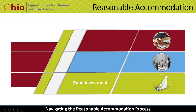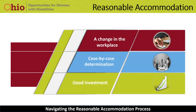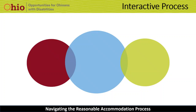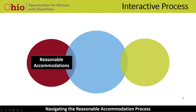There definitely is a business case for both hiring people with disabilities and also providing reasonable accommodations. Let's now turn our focus to the process of providing these accommodations. Is having a process required? The simple answer is no. Title I of the ADA requires covered employers to provide reasonable accommodations to qualified applicants and employees with disabilities unless doing so causes an undue hardship. Title I is enforced by the EEOC — the Equal Employment Opportunity Commission.